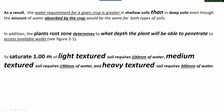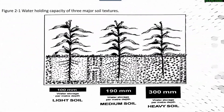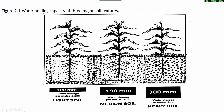In addition, the plant's root zone determines to what depth the plant will be able to penetrate to access available water. To saturate one meter of light textured soil requires 100 mm of water. Medium textured soil requires 190 mm of water, and heavy textured soil requires 300 mm of water. These are the water holding capacities of the three major soil textures — light, medium, and heavy — for saturating one meter depth.